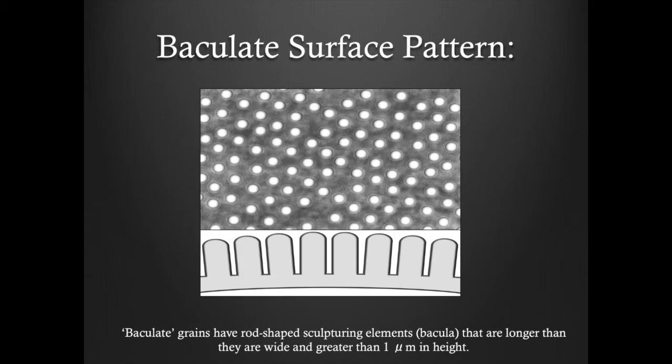Rugulate grains have broad shaped sculpturing elements that are longer than they are wide and greater than one micrometer in height.